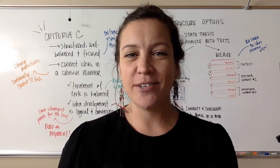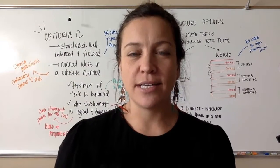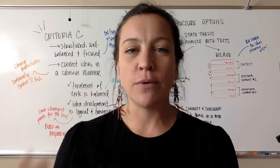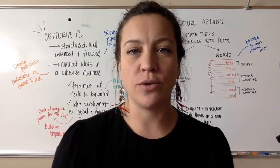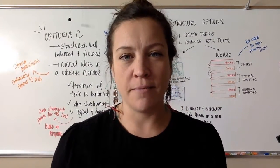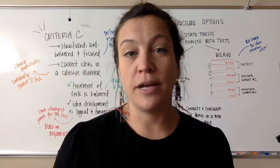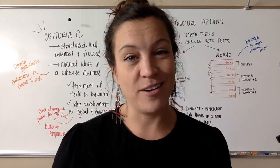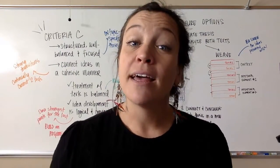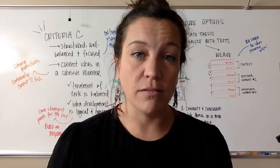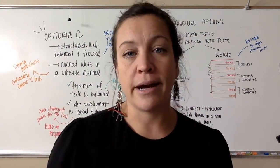Hi nerds! This video is all about criteria C. Just like in the other two, the first thing we want to do is take a look at the rubric and figure out what the evaluator is going to be looking for in your IA. The second thing is to return to your evaluation from your last practice, if you have one, and determine where things might be missing — but also identify where you do it well, so you don't lose those pieces in the act of revision.